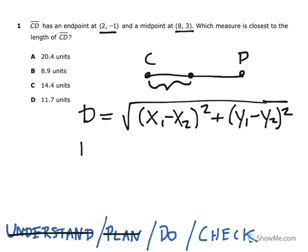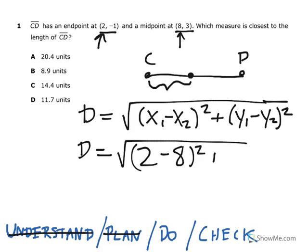Okay, so my x coordinates: x1 is going to be 2, x2 is going to be 8. Y1 is going to be -1, and y2 is going to be 3. If you did it the other way around, if you had 1 and 2 reversed, it's not going to matter because you're going to square it, so whether your answer is positive or negative, it's not going to matter.